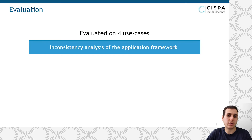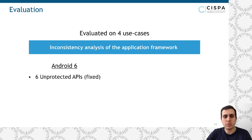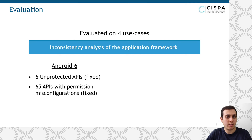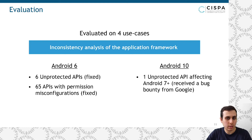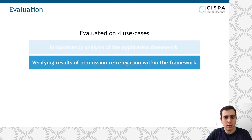After we built Dynamo and used it to build a permission mapping for different Android versions, we found a chance to evaluate it in four use cases from literature. First, we conducted a consistency analysis in the application framework to detect unprotected interfaces and misconfigured APIs. We found six unprotected APIs in Android 6, but we also found 65 APIs with permission misconfiguration, where the permissions are enforced on the wrong user profile. When we conducted the same analysis on Android 10, we found one API that tends to be unprotected since Android 7 and above. Upon reporting this issue to Google, we received a bug bounty accordingly.